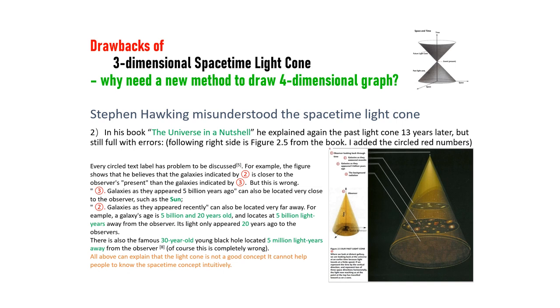For example, a galaxy's age is 5 billion and 20 years old and located at 5 billion light years away from the observer. Its light only appeared 20 years ago to the observers. There is also the famous 30 year old young black hole located 5 million light years away from the observer. Of course, this is completely wrong.